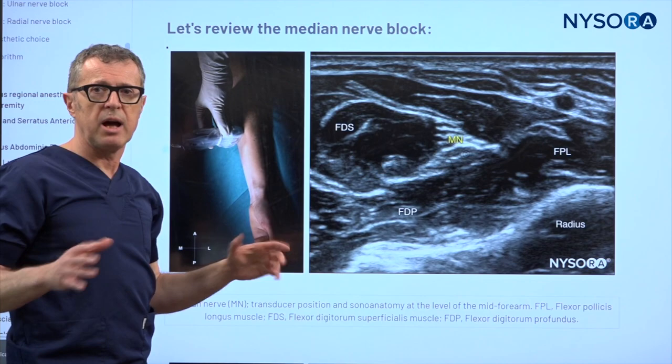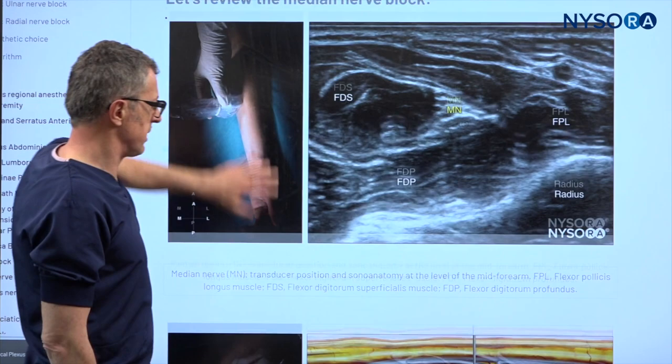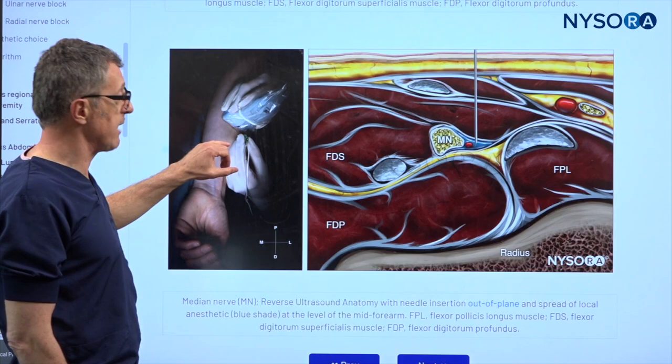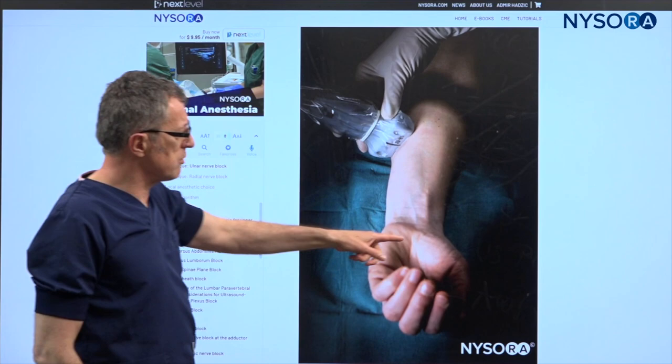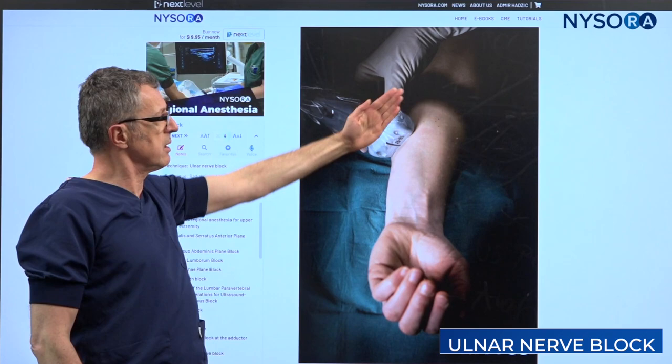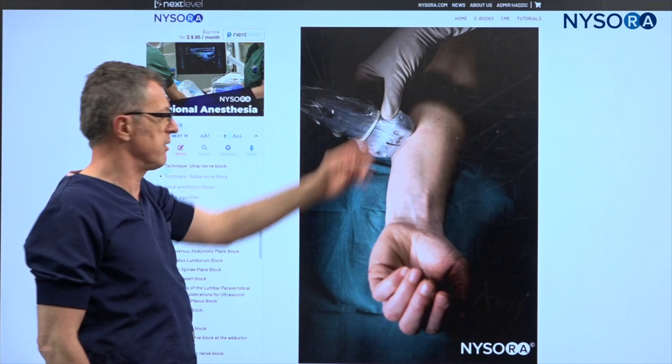That was the median nerve block. Let's review: here's the probe position, this is the image we're trying to get, that's the reverse ultrasound anatomy, here's the technique showing in-plane injection, and that's the needle position we're trying to accomplish. Now here's the probe position for the ulnar nerve block — the probe has slid more medially from the median nerve position.